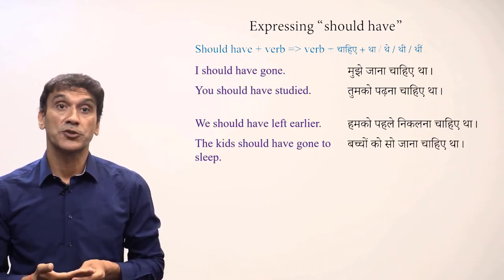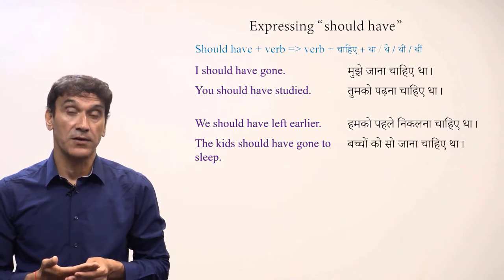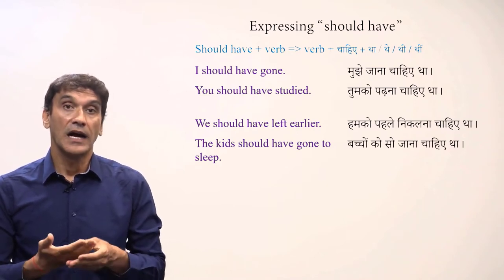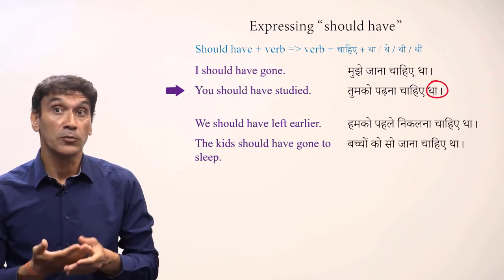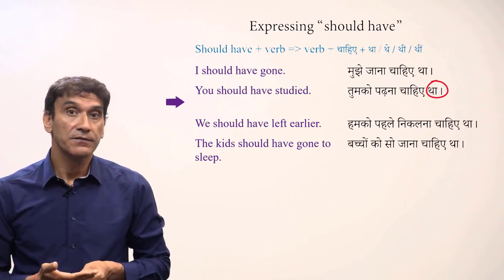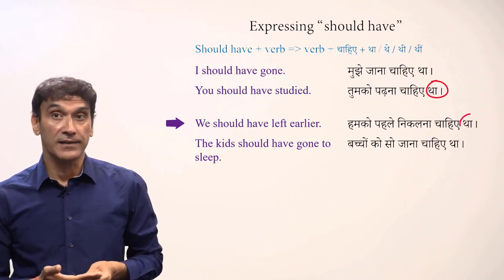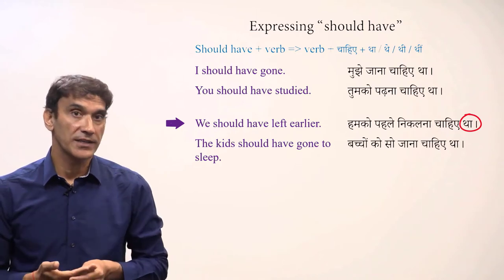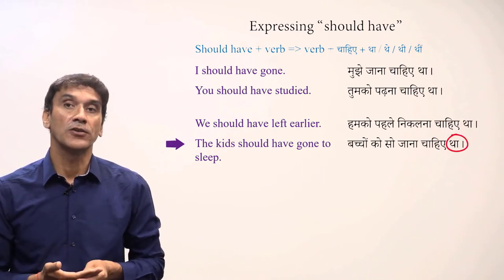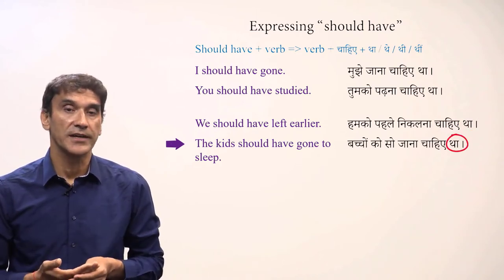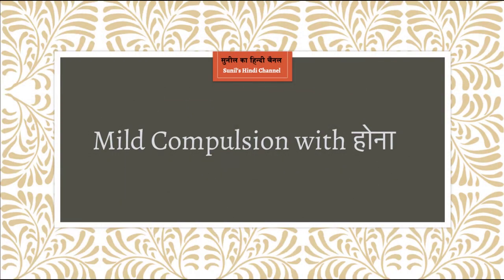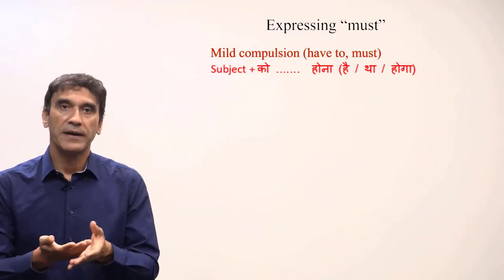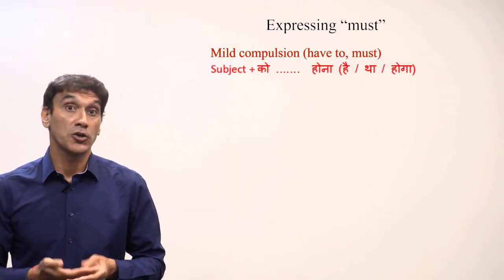Let's take some examples of the 'should have' type construction — the past tense of chahiye. I should have gone — mujhe jana chahiye tha. You should have studied — tumko padhana chahiye tha. We should have left earlier — humko pahle nikalna chahiye tha. The kids should have gone to sleep — bachon ko so jana chahiye tha.